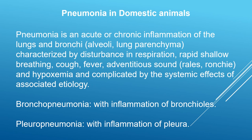Pneumonia occurs in all animals, and especially domestic animals suffer much. Pneumonia is defined as acute or chronic inflammation of the lungs and bronchi, mainly the alveoli — called the lung parenchyma. It is characterized by disturbance in respiration; respiration becomes rapid and shallow because there is less space for oxygen to enter. An important sign is coughing — a reflex action due to irritation, inflammation, infection, and the presence of mucus.